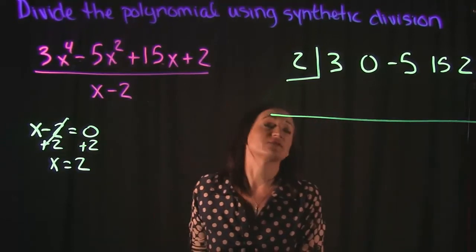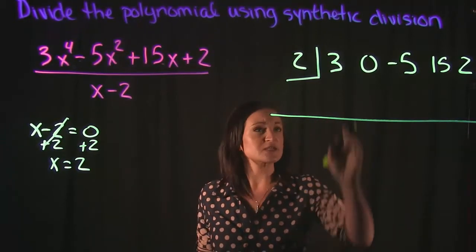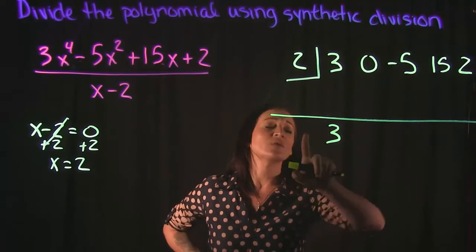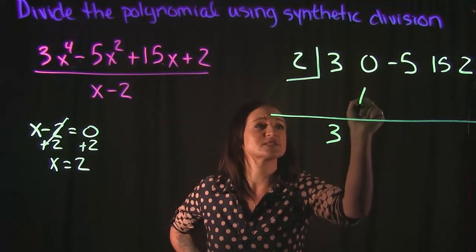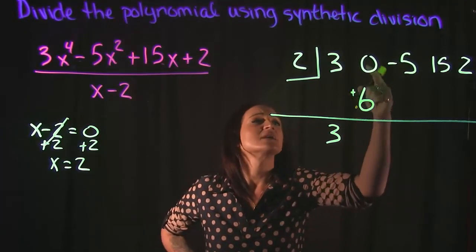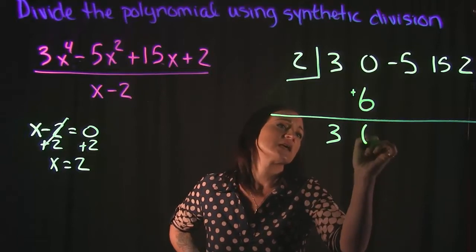So let's go ahead and divide. First step in synthetic division, drop the first number down, so we're dropping down 3. We then multiply. We do 3 times 2, which is 6, and we put it here in our next column, and we add. 0 plus 6 is 6.